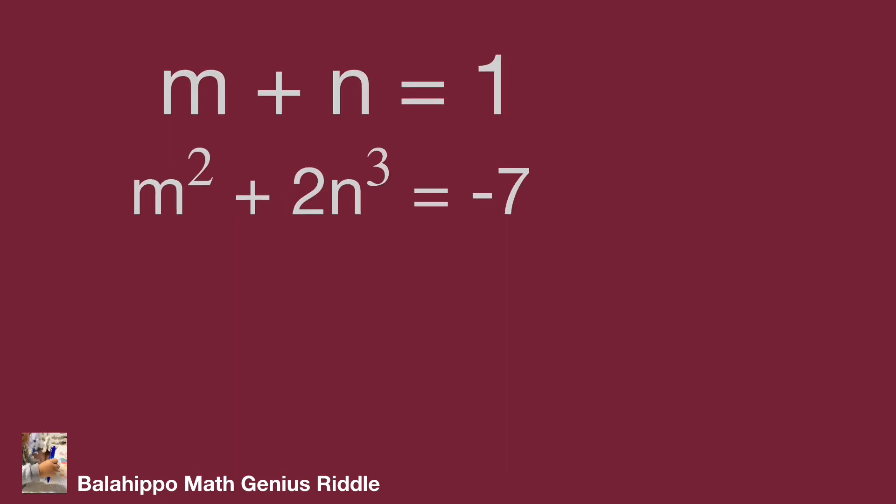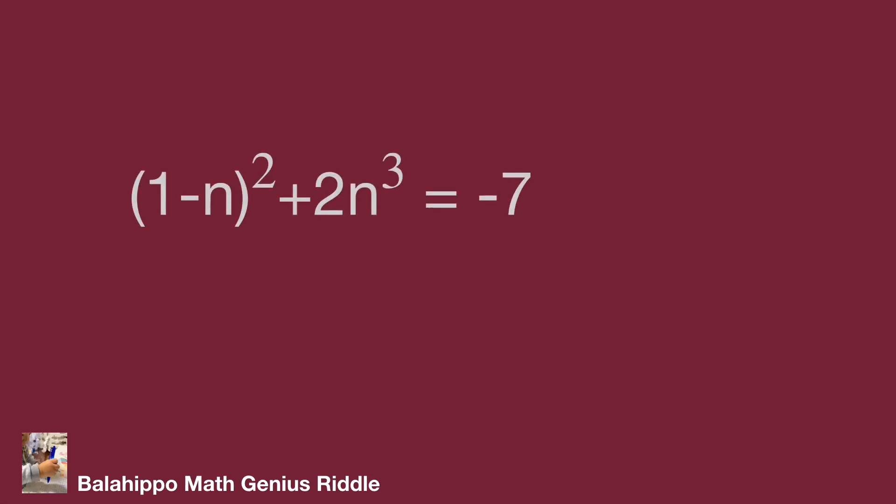Adjust the first equation, get m equals 1 minus n. Substitute m by 1 minus n into the second equation. We get quantity 1 minus n squared plus 2n cubed equals minus 7.